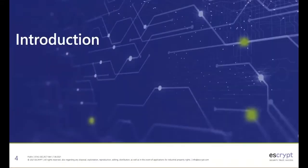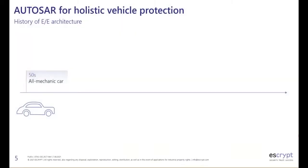Let's begin with a brief history lesson on the E/E architecture. Looking back at the 1950s, the car was basically all mechanical — electronics was only available for things like radio or lights. This changed in subsequent decades when more and more electronics and ECUs were introduced into the car, which also sparked the development of technologies like the CAN bus in the 1980s and 90s.